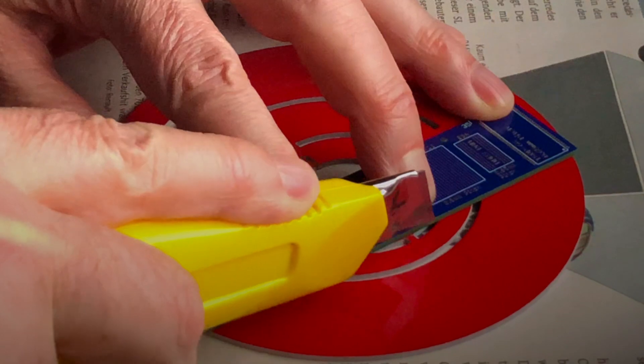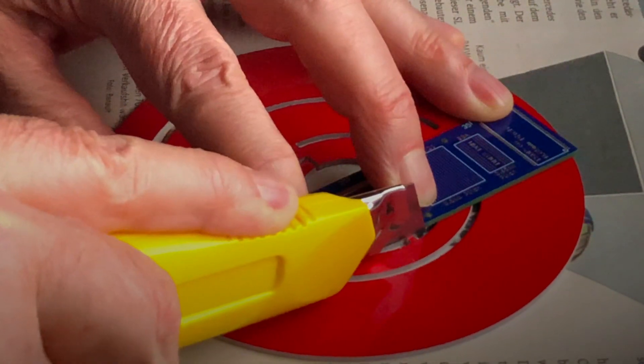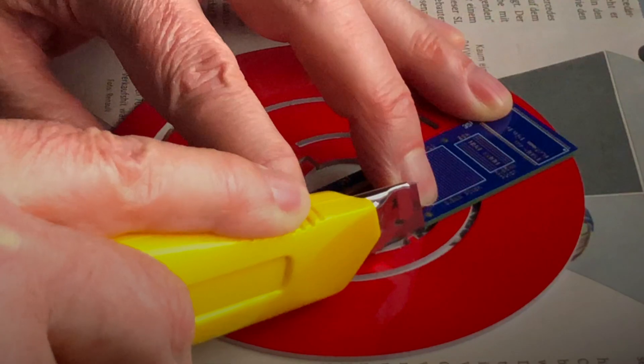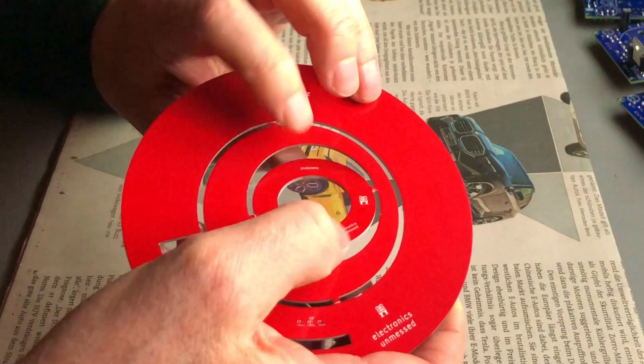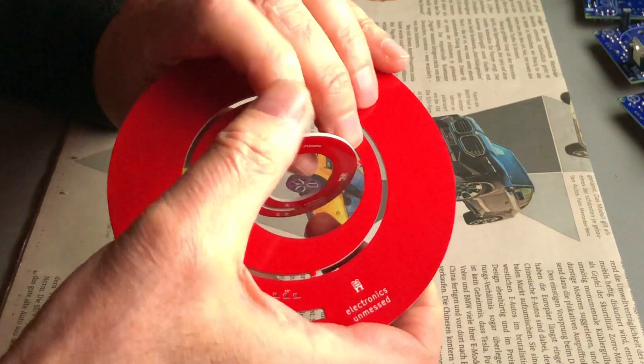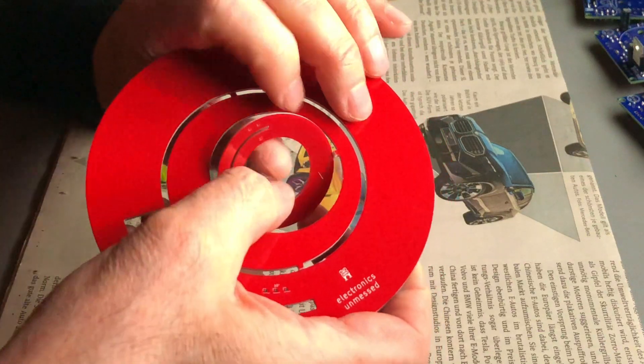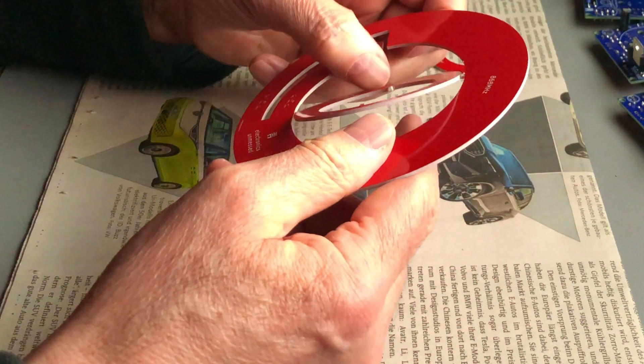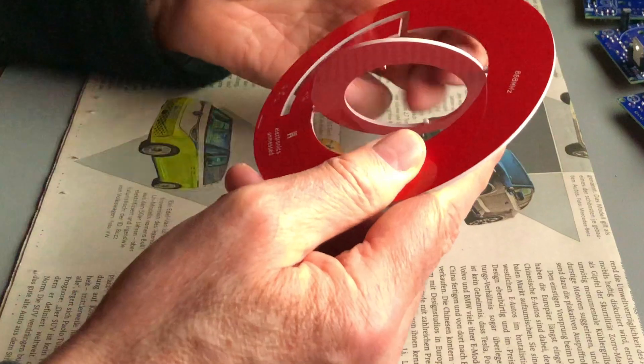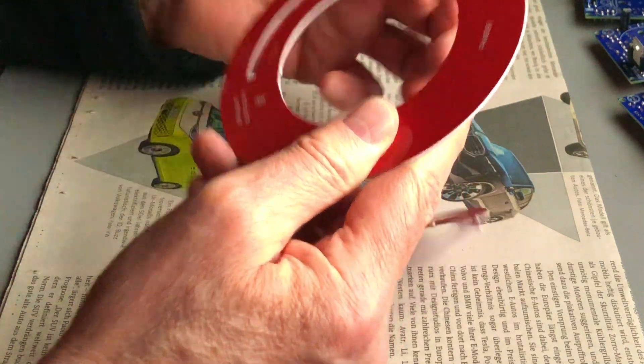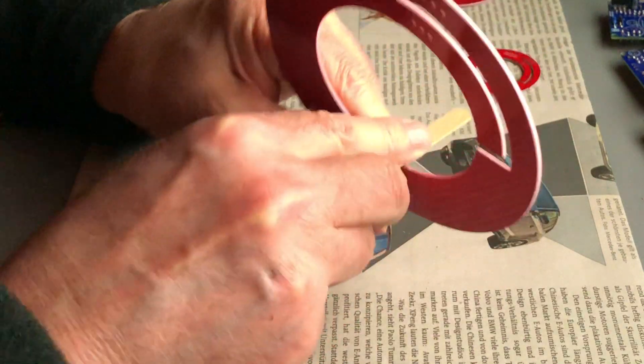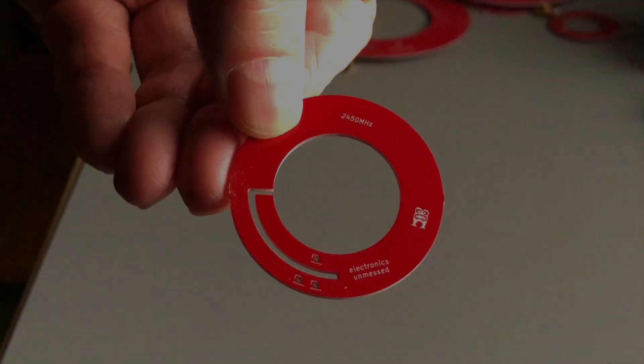Scratching on both sides with a knife, you are getting clean, predetermined breaking points. Then you can break the pieces apart, getting the two antennas. Smoothing the parts with sandpaper makes them look really clean.